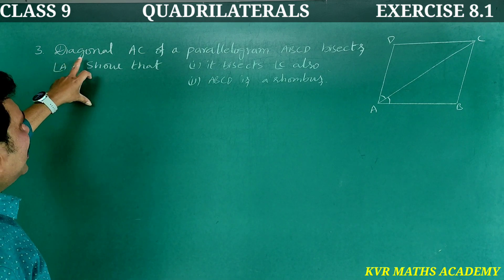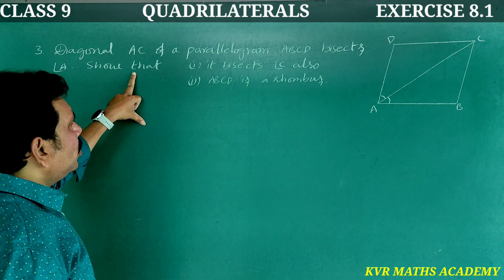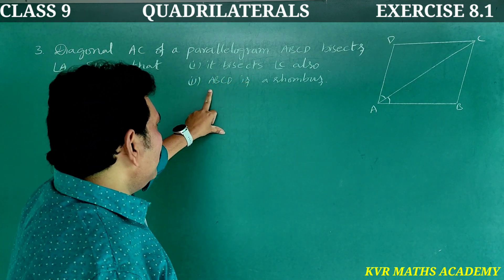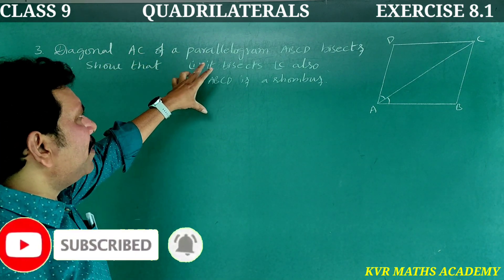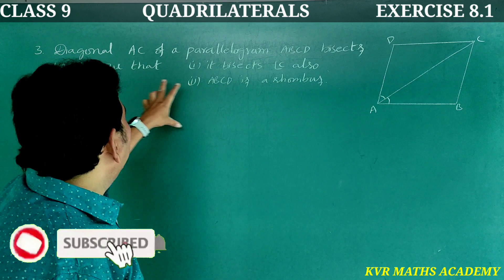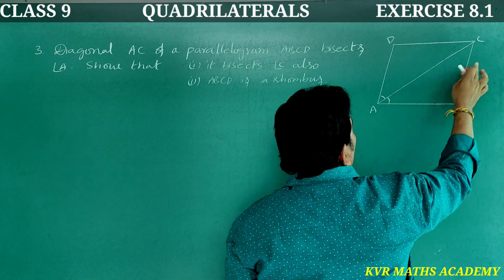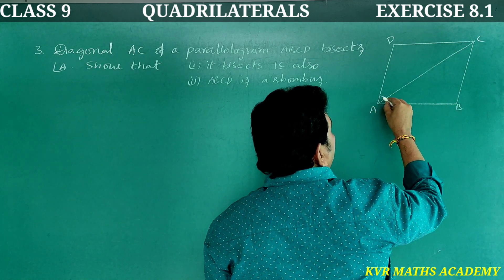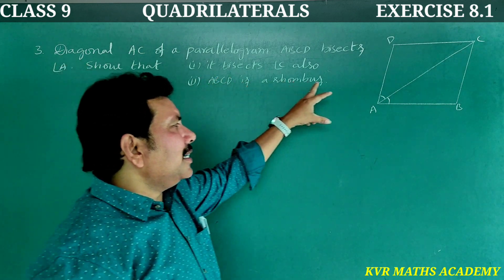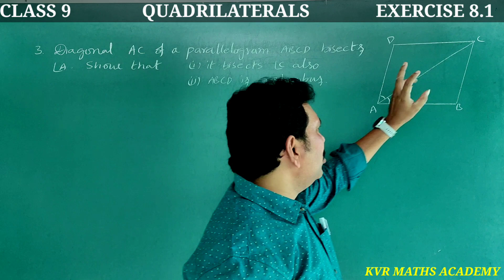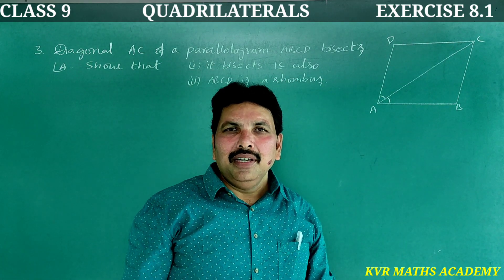Third question: Diagonal AC of parallelogram ABCD bisects angle A. Show that it bisects angle C also, and that ABCD is a rhombus. Given: Diagonal AC of the parallelogram ABCD bisects angle A. What we have to show: AC bisects angle C also, and ABCD is a rhombus.